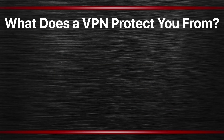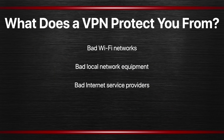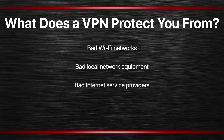So what does a VPN protect you from? First, it protects you from bad WiFi networks and bad local network equipment — the cable modem or DSL modem sitting behind the router might be compromised, and a VPN protects against that. It also protects against the internet service provider itself tracking your data, since everything is encrypted as it passes through. Your coffee shop's or hotel's ISP wouldn't know what you're doing or be able to intercept your data.